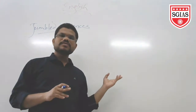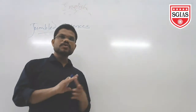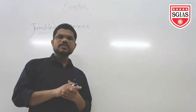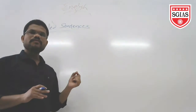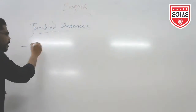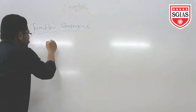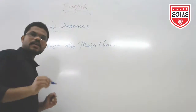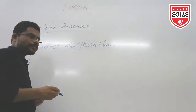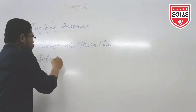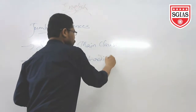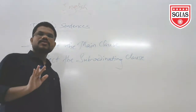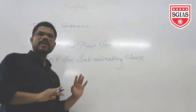If there is a compound sentence, we find two main clauses and the appropriate coordinating conjunction to form the compound sentence. But if there is a complex sentence, the first step is to select the main clause. After selecting the main clause, you then select the subordinating clause. After arranging the proper sequence, you can judge whether the arranged sequence makes a proper sentence.